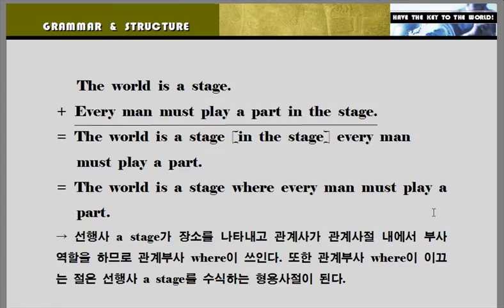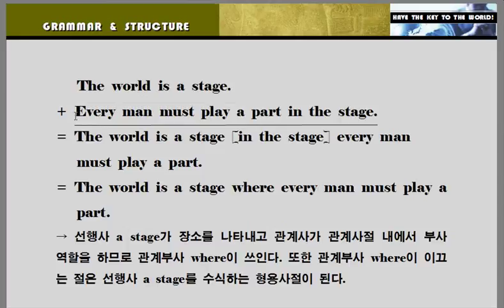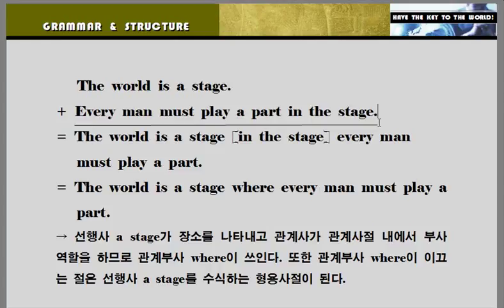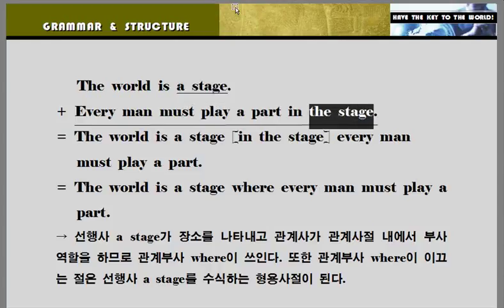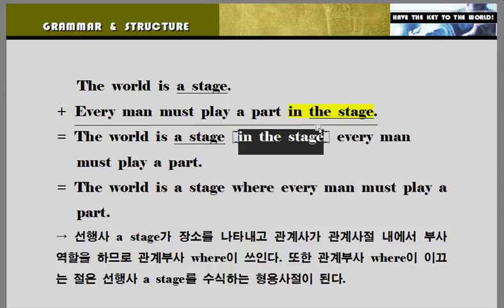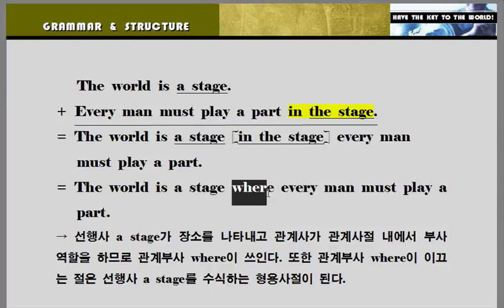Grammar and structure로 이동하겠습니다. 관계부사 where에 대해서 알아보도록 하겠습니다. 다음 두 개의 문장을 살펴보겠습니다. 'The world is a stage' — 세상은 일종의 무대이다. 'Our men must apply a part in the stage' — 모든 사람들은 그 무대에서 역할을 해야만 한다. 이 두 문장이 합쳐진다고 생각해볼까요? A stage와 in the stage가 같은 부분이죠. in the stage까지 하나의 덩어리로 묶이면 — in the stage는 '어디에서'라는 장소를 나타내죠. 앞 문장의 stage를 동시에 포함하고 있는 표현이 바로 where가 되는 거죠.